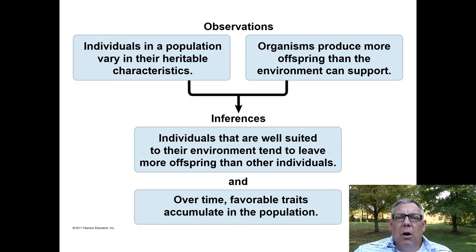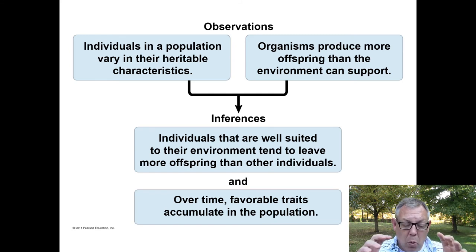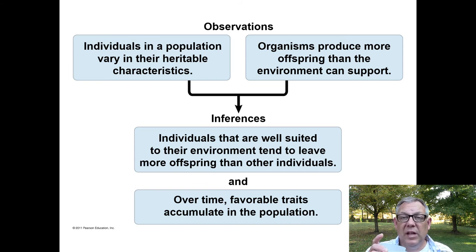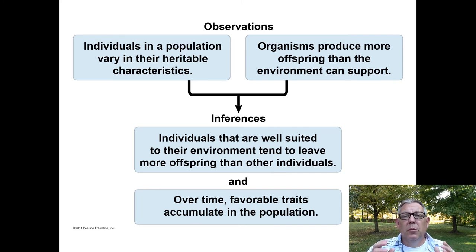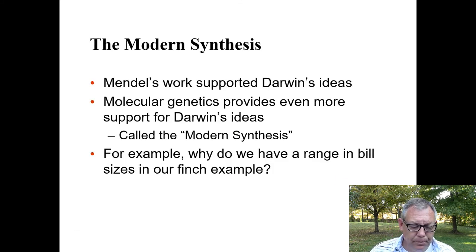To summarize Darwin's argument: individuals vary in their heritable characteristics; there are far more offspring produced than can survive; only some organisms survive, but it's not random who survives — those well suited to their environment tend to leave more offspring, and their offspring have those same characteristics. Over time, favorable traits accumulate because organisms with unfavorable traits die. That's natural selection.